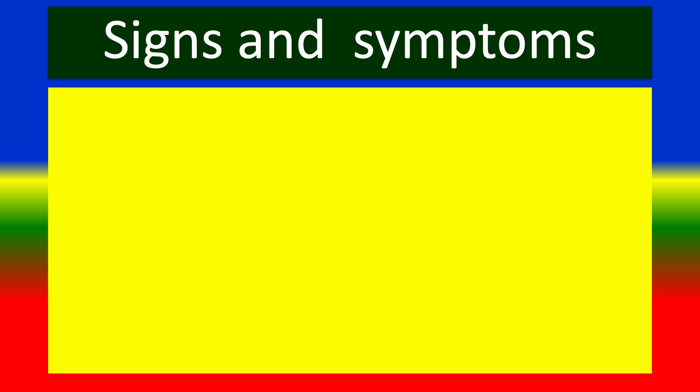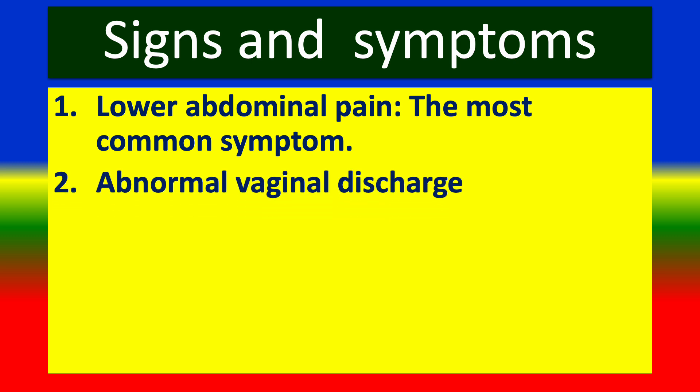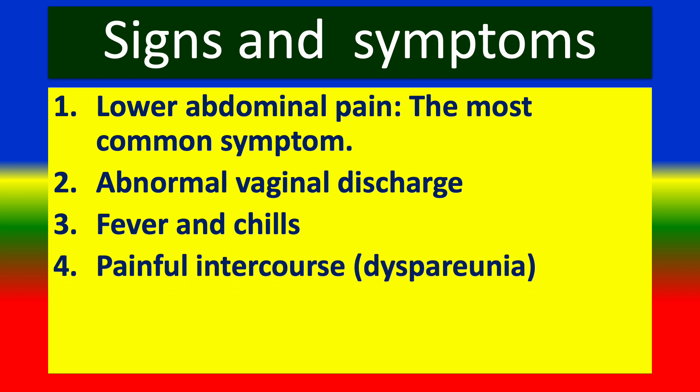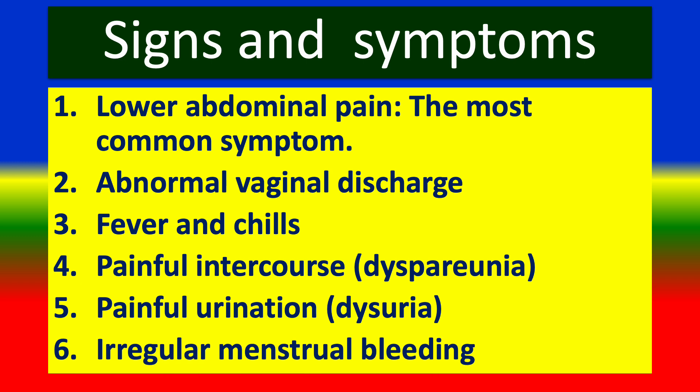Signs and symptoms: 1. Lower abdominal pain. 2. Abnormal vaginal discharge. 3. Fever and chills. 4. Painful intercourse. 5. Painful urination. 6. Irregular menstrual bleeding.